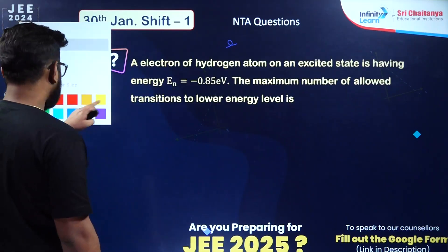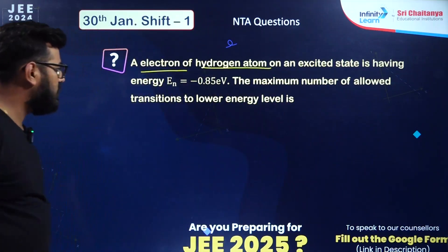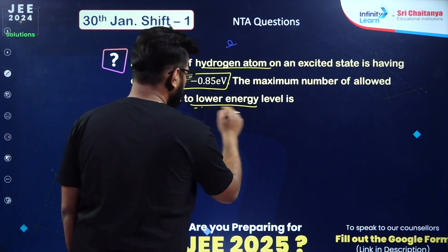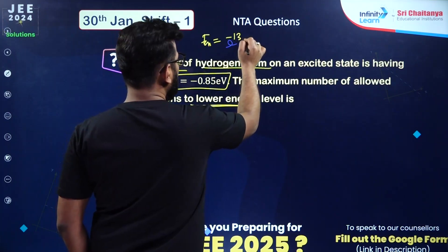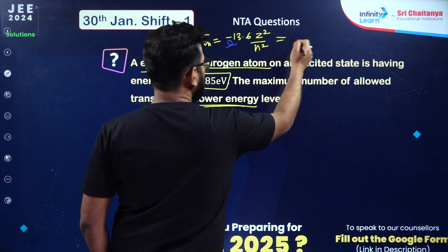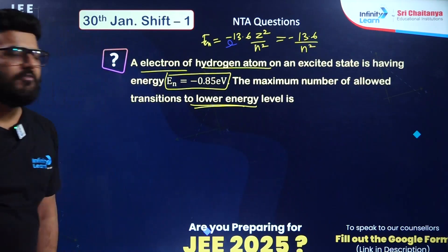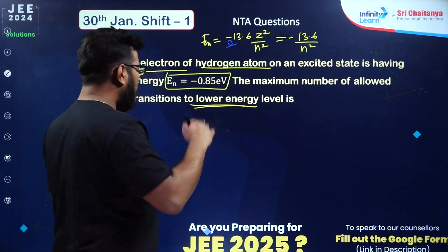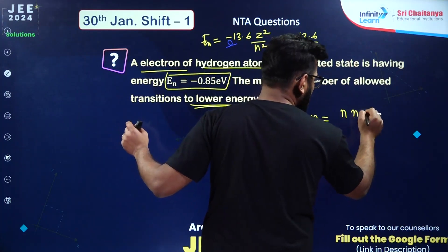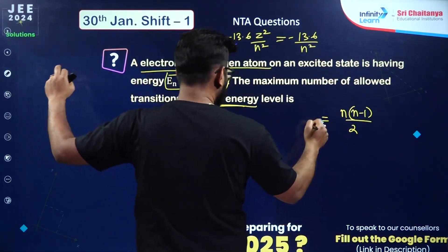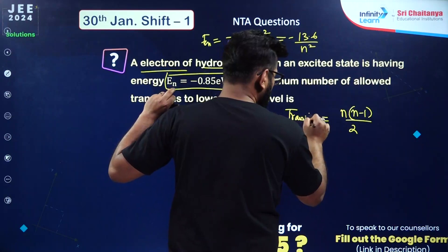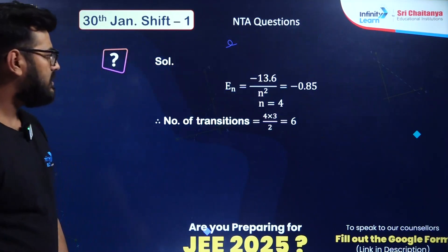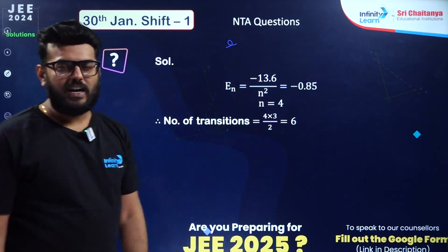An electron in hydrogen atom has energy E_n = -0.85 electron volt. The maximum number of allowed transitions to lower energy levels is asked. Using E_n = -13.6/N², when E_n = -0.85, N equals 4. The number of allowed transitions is N(N-1)/2 = 4×3/2 = 6. The correct answer is 6.